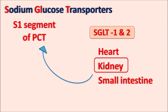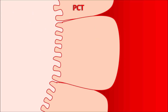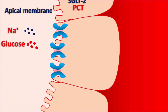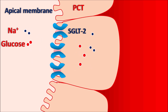Dapagliflozin acts on this location, thereby inhibiting the flow of glucose and its reabsorption. In the proximal convoluted tubule S1 segment, there is an inner apical membrane and a basolateral membrane. Within the urinary filtrate, glucose as well as sodium are present. They can be reabsorbed at the apical membrane through the SGLT2 transporter, through which both sodium and glucose are simultaneously transported into the tubular membrane.